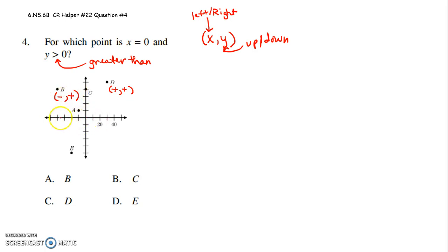Point E would have an x value from moving from 0, 0 to the left of less than 0, and a y value less than 0. Both of those would be negative.